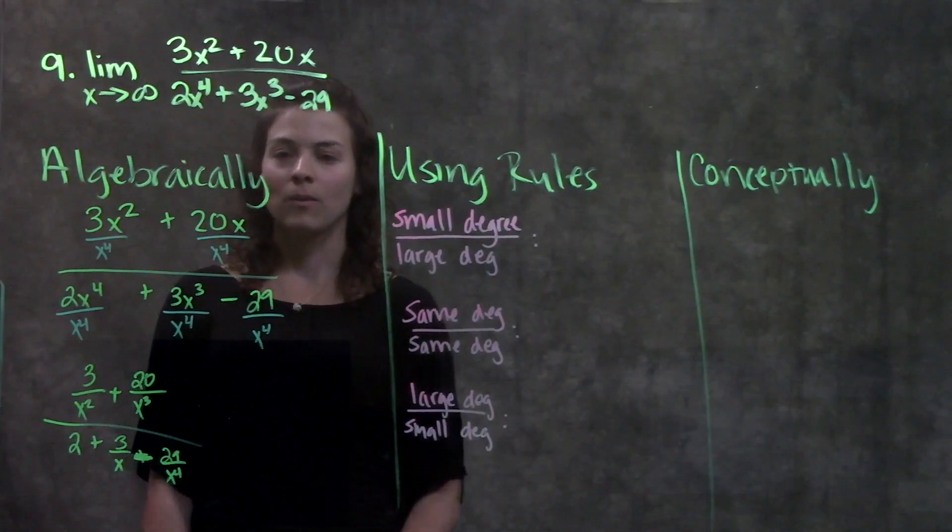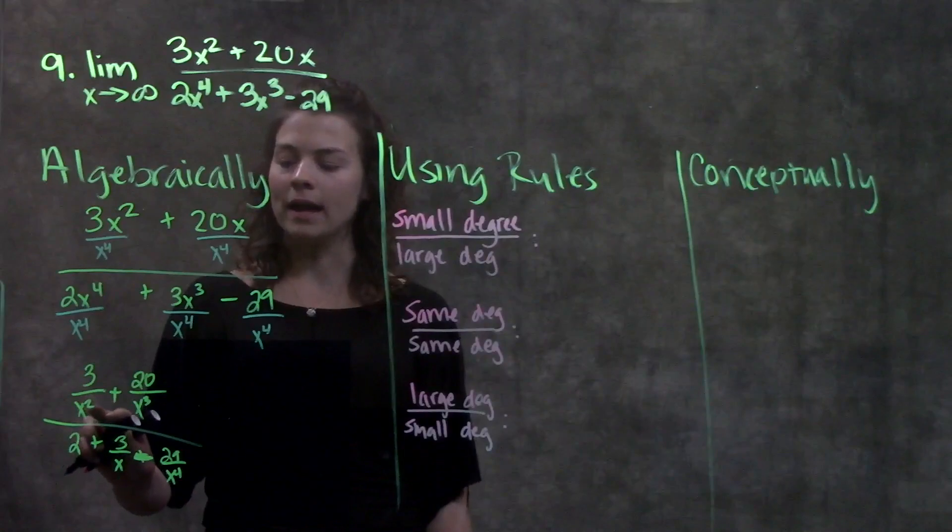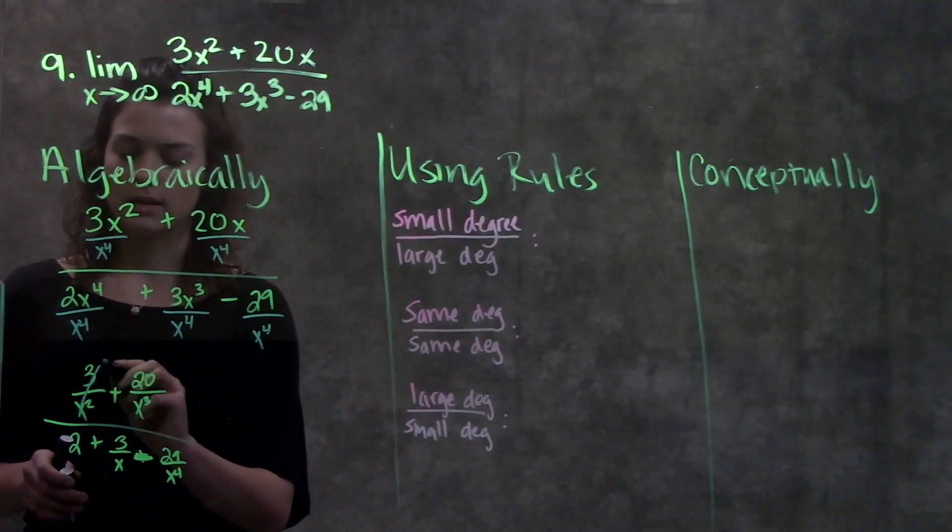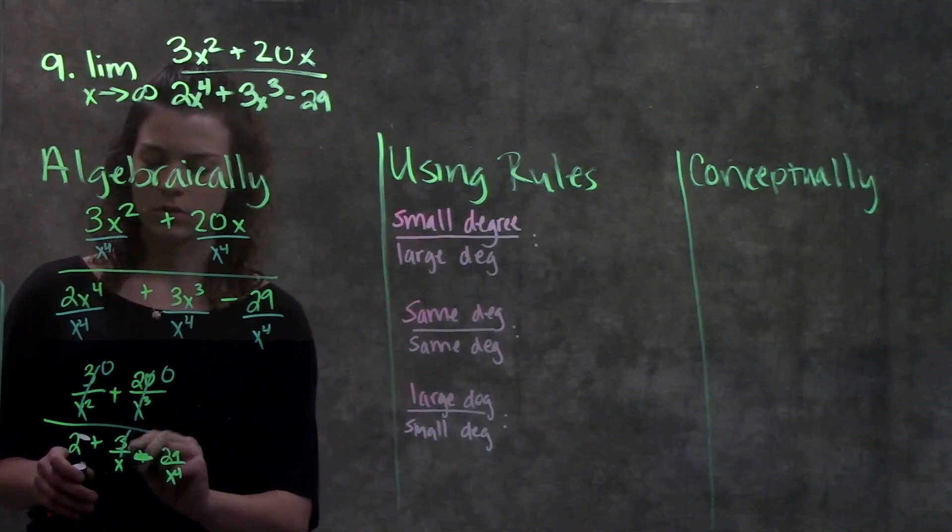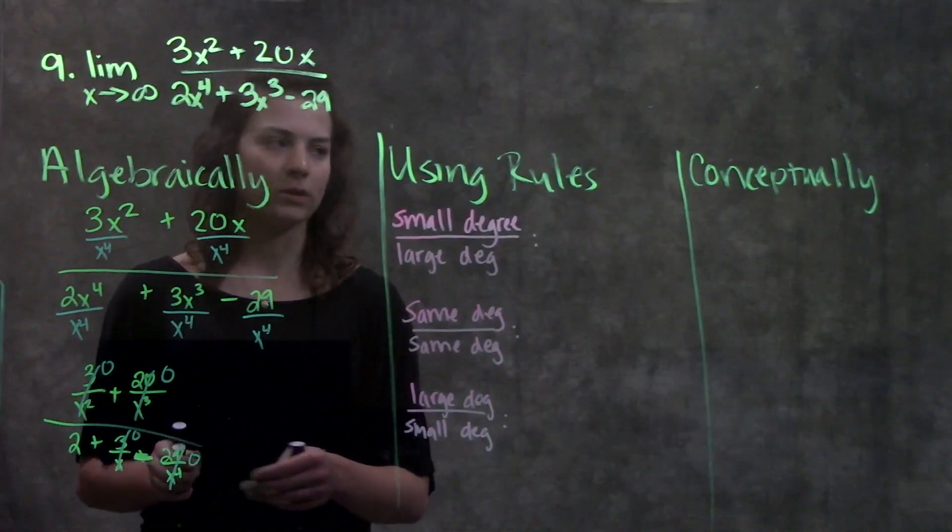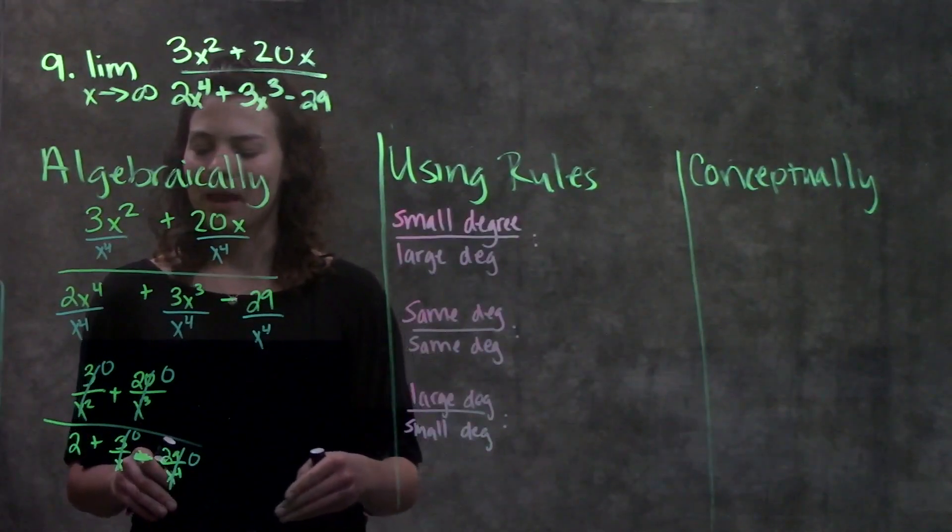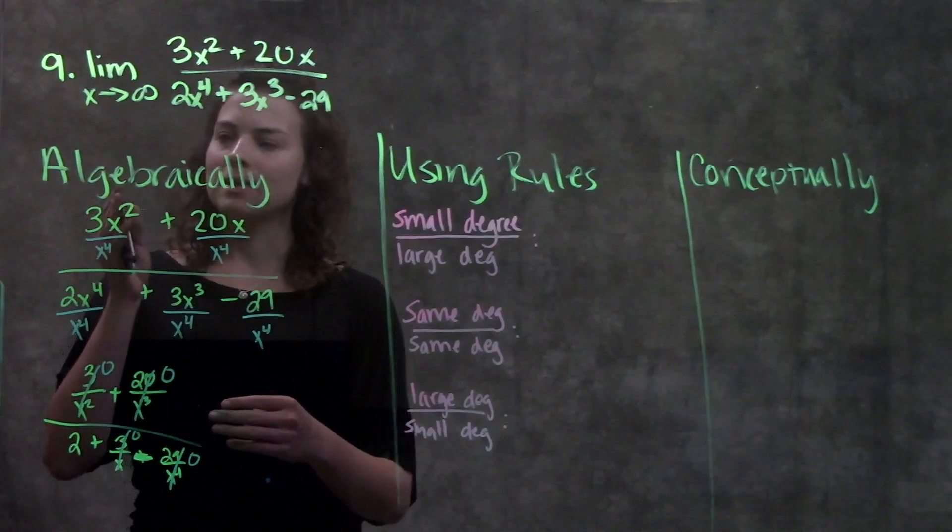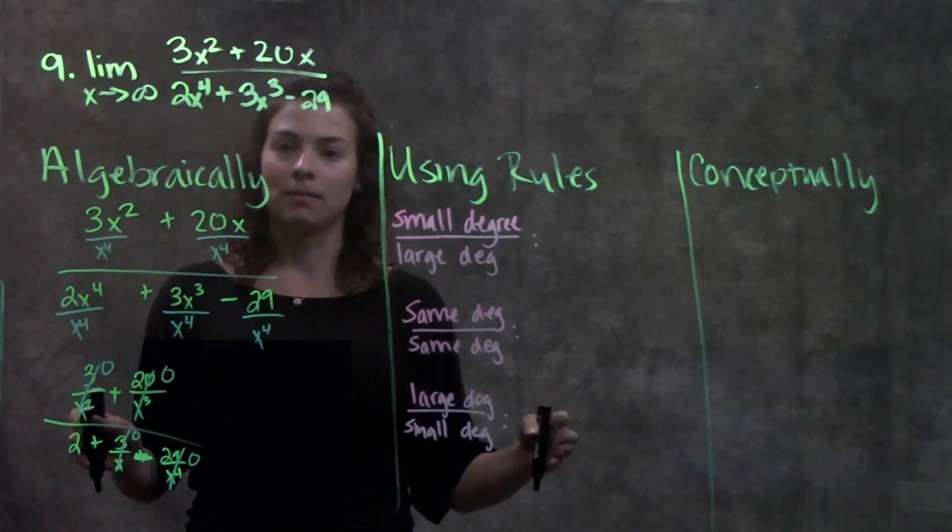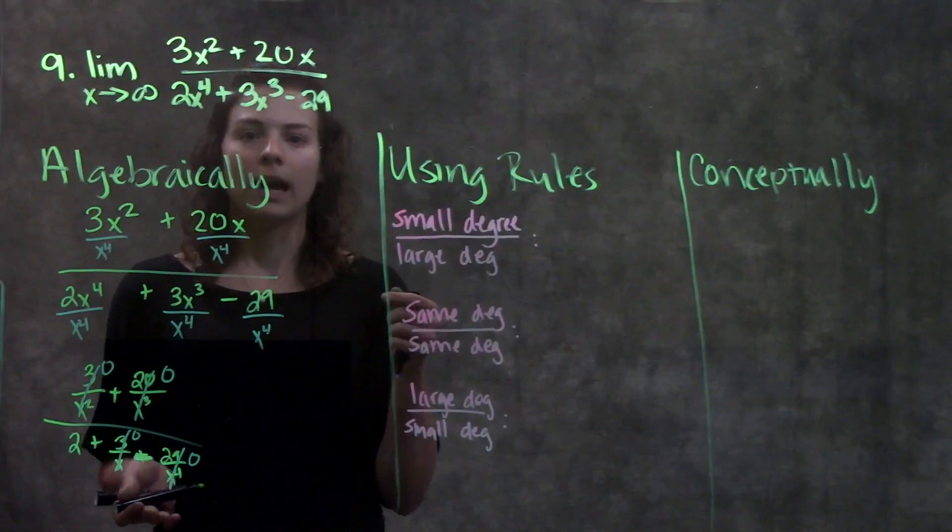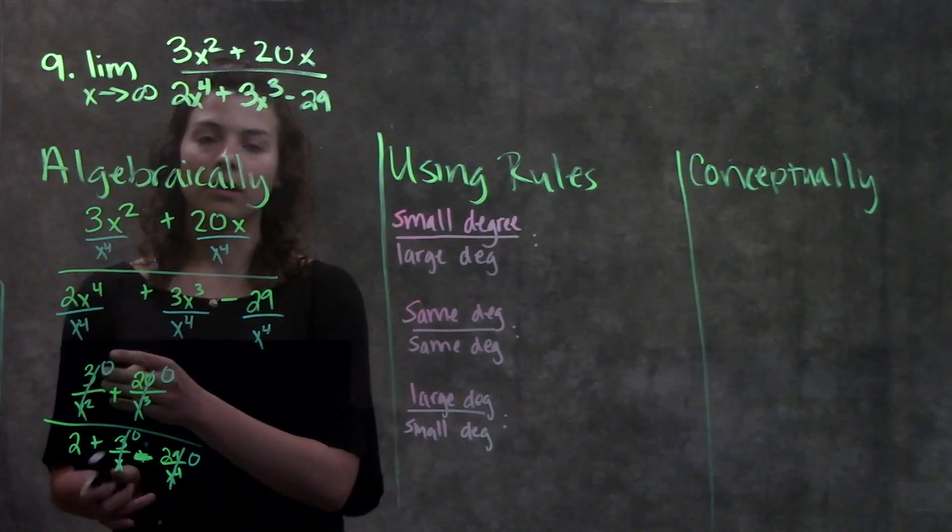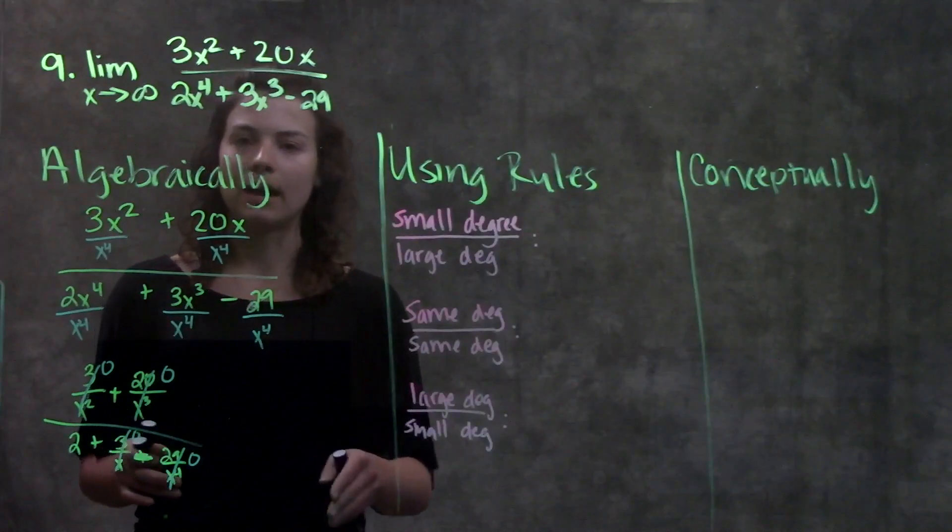From here, if you ever have a number over x in this fraction, you can just cancel it out, that becomes zero. So 3 over x squared, that's zero. 20 over x cubed, that becomes zero. 3 over x is zero. 29 over x to the fourth is zero. And the reason why we do this is something we'll talk about more in the conceptually column. But just think about it. If you have a limit that's approaching infinity, you have a super big number on the denominator. If you have a super big number being divided into a small number, how many times does that super big number go into that small number? Basically zero times. So that's why every time you have a number over x or over infinity, you cross that out, becomes zero.